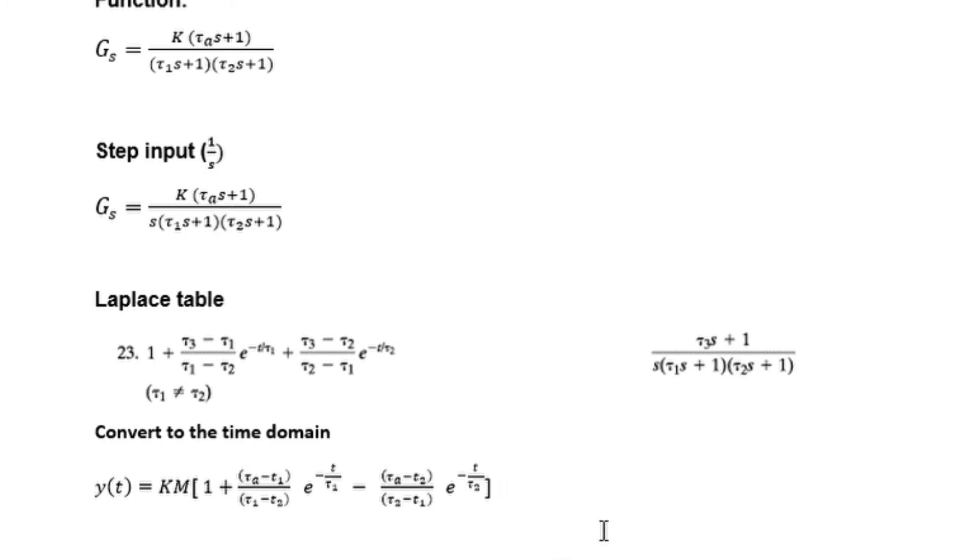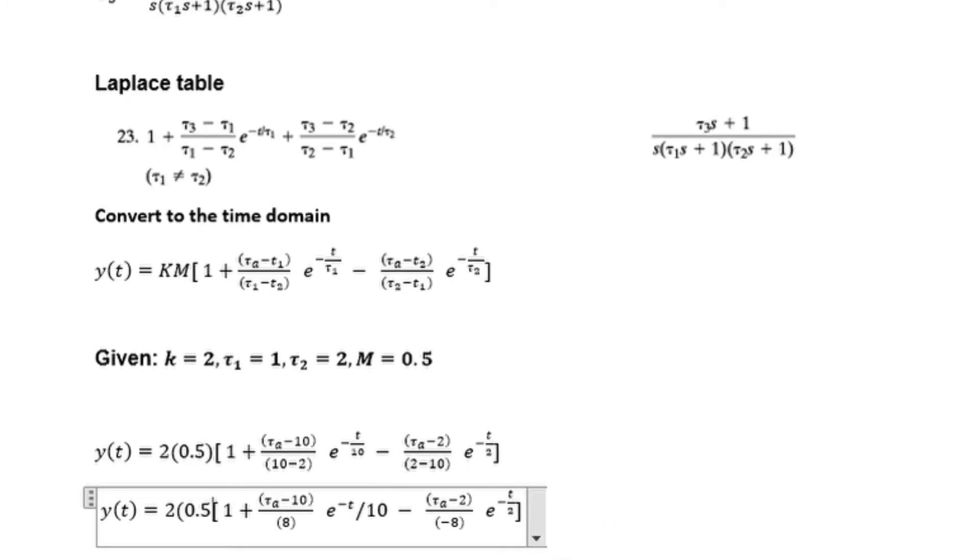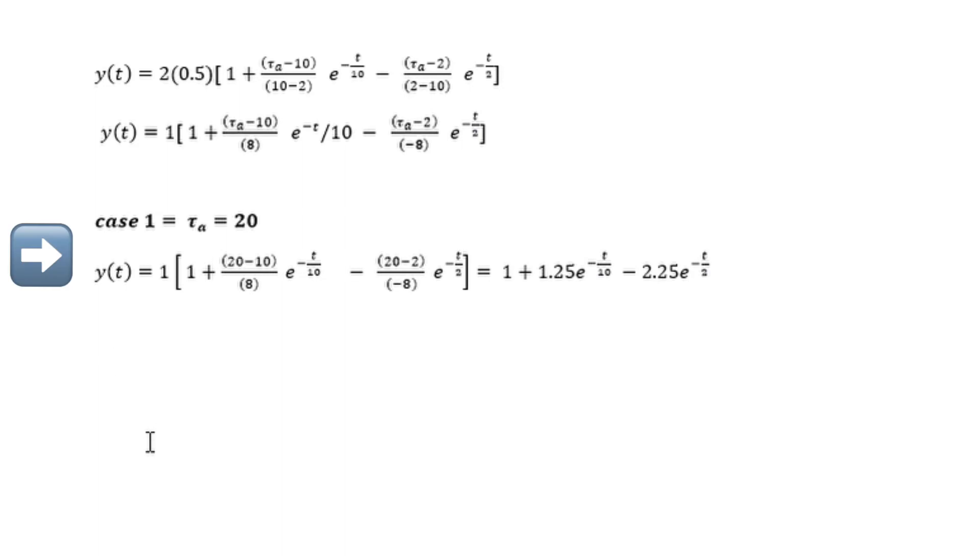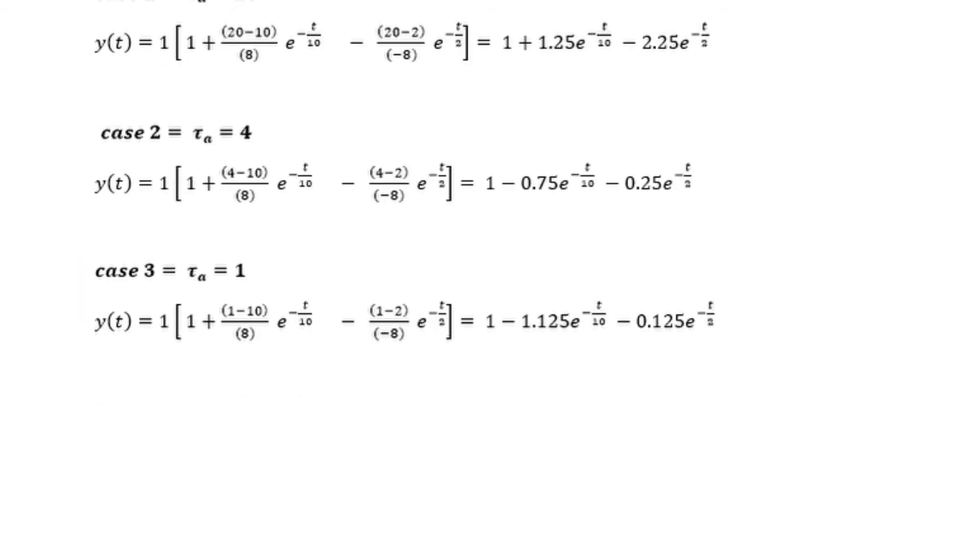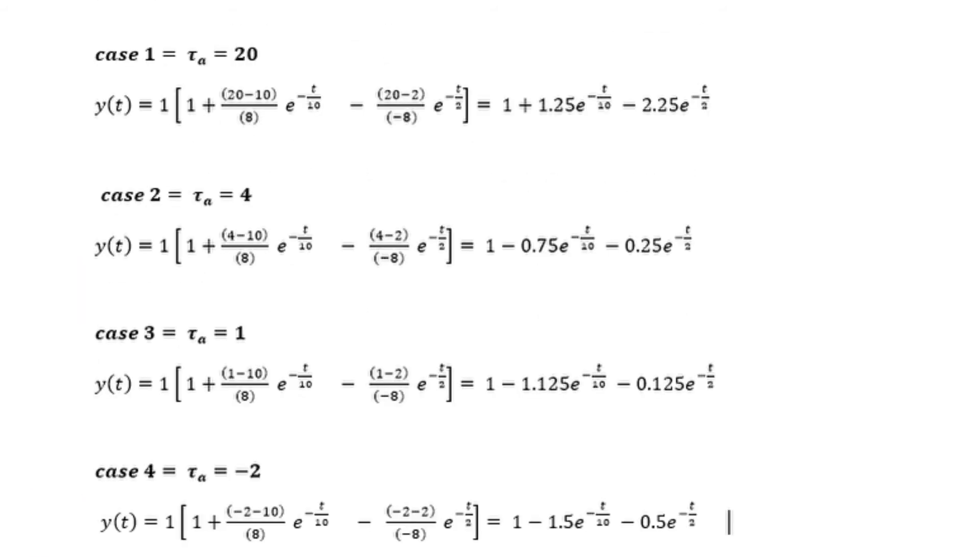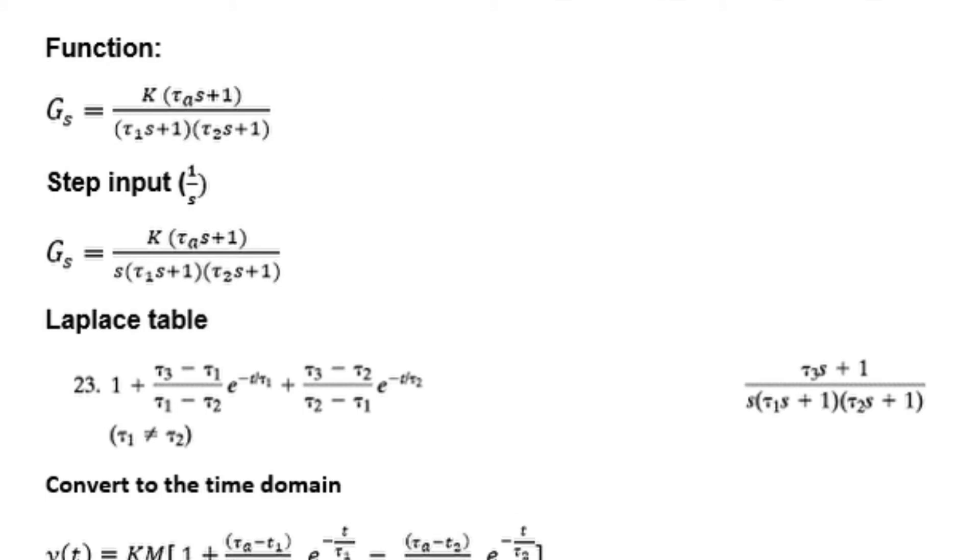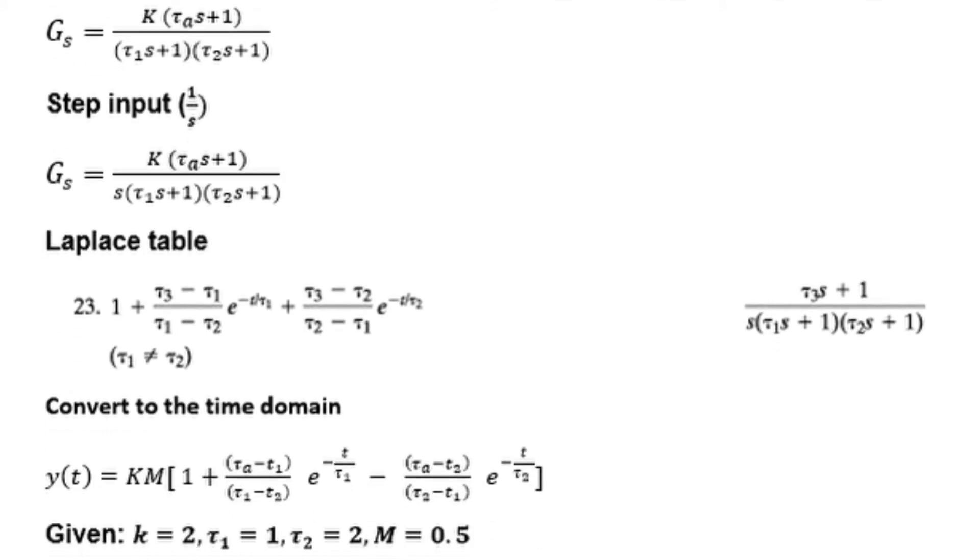After converting it into its time domain, substitute the given values. We are given magnitude is 0.5 and different process time constants. For case 1, we have τa equals 20. For case 2, we have 4. For case 3 and case 4, substitute the given values.